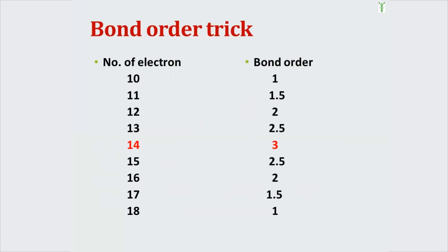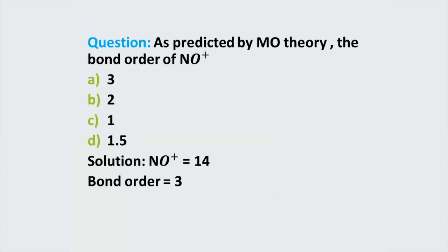You can see how easily you can find the bond order of different molecules and solve any question related to bond order, bond length, and stability. Let us see one question asked in GATE: as predicted by molecular orbital theory, the bond order of NO⁺ is — options given are 3, 2, 1, and 1.5. The number of electrons for NO⁺ is 14, so bond order is 3. The correct answer is option A.